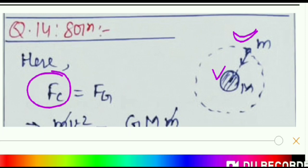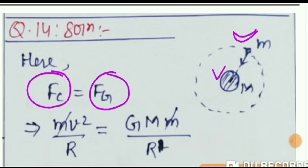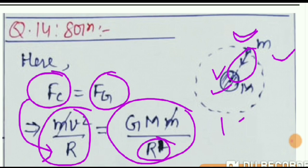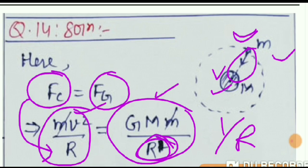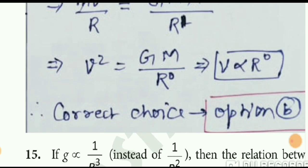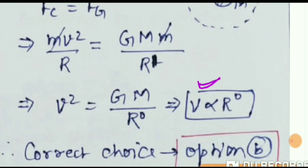Here the centripetal force equals the gravitational force. We write centripetal force as mv²/r and gravitational force in the new form. Setting them equal and canceling common terms, we find that all the r terms cancel out. This means orbital velocity will not depend on the orbit radius. So the correct choice is option B.